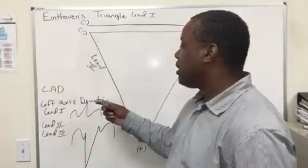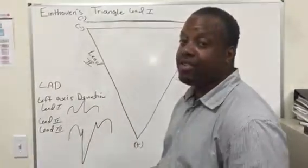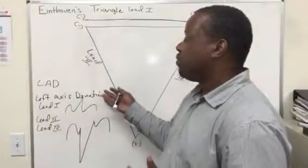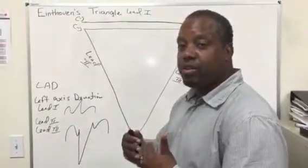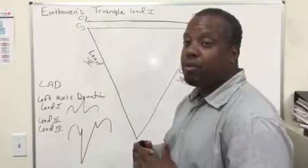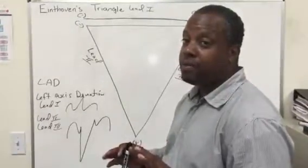Left axis deviation will let you know that the patient's left ventricle has enlarged. And usually that's indicative of the patient having heart attacks. Some patients have acute pulmonary edema secondary to those injuries. Mitral valve prolapse also could be a cause of it.